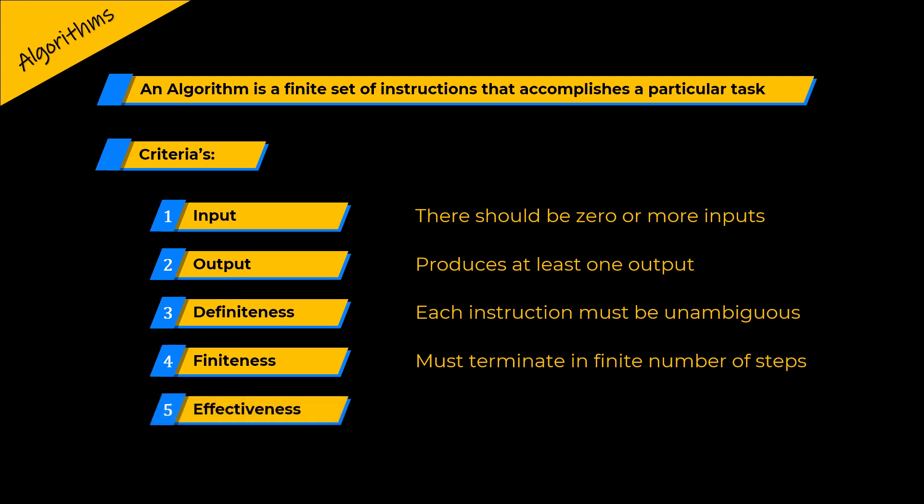The fifth and final criteria is effectiveness. An algorithm must be effective. That is, every step or instruction must be basic. Therefore, an algorithm is composed of a finite set of steps, each of which may require one or more operations and must satisfy all five criteria.